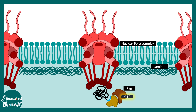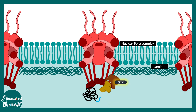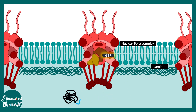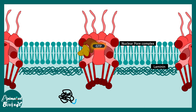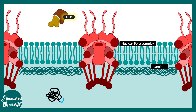Once the importin-bound protein gets inside the nucleus, RAN-GTP binds to importin. RAN is a monomeric G protein very similar to RAS, RAB, etc. RAN-GTP leads to dissociation of the protein complex, and the RAN-GTP-bound importin is eventually exported out of the nucleus into the cytosol. Inside the cytosol, there are specific proteins known as GTPase activator proteins, or GAPs.